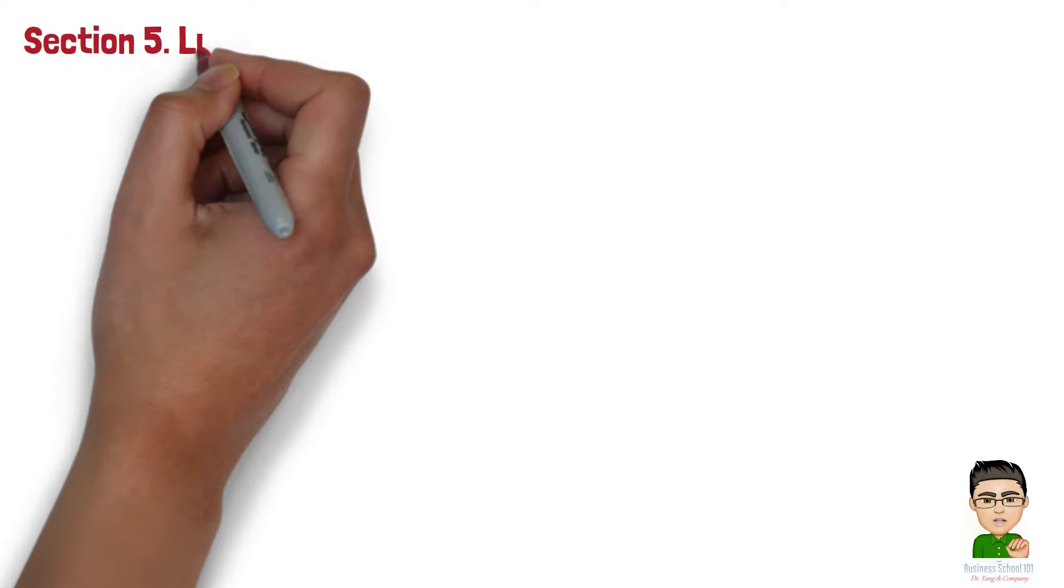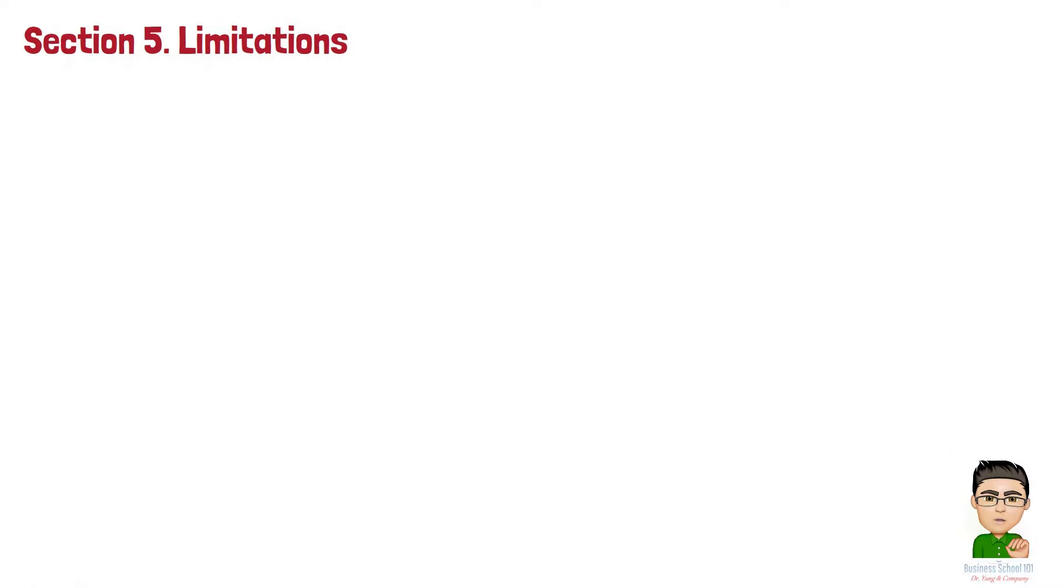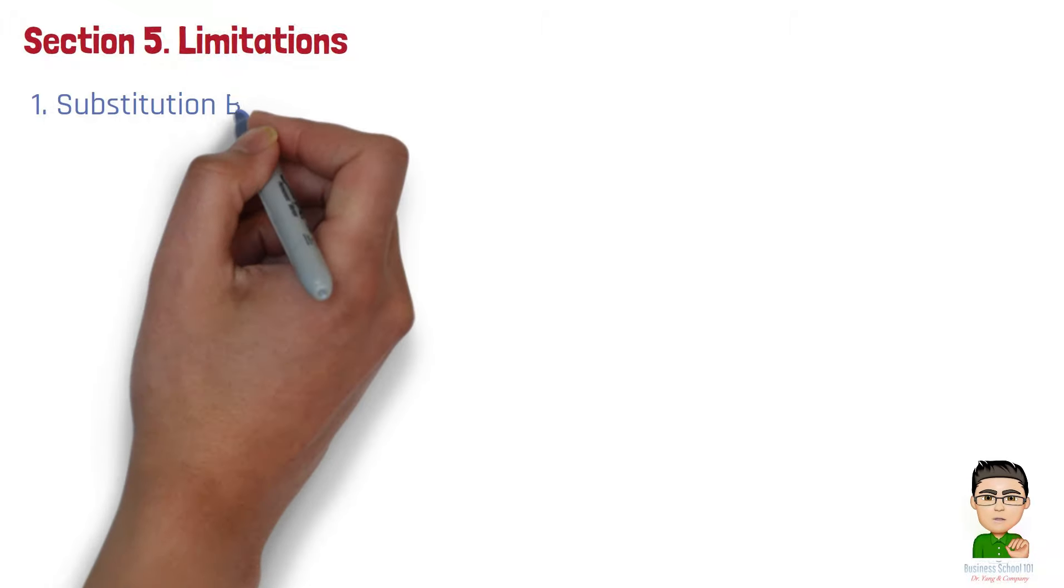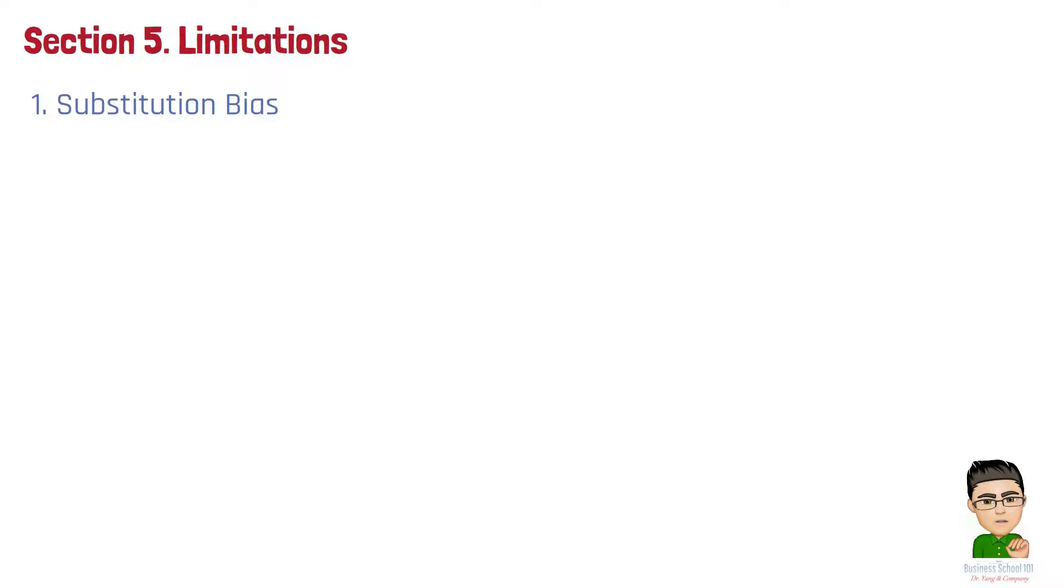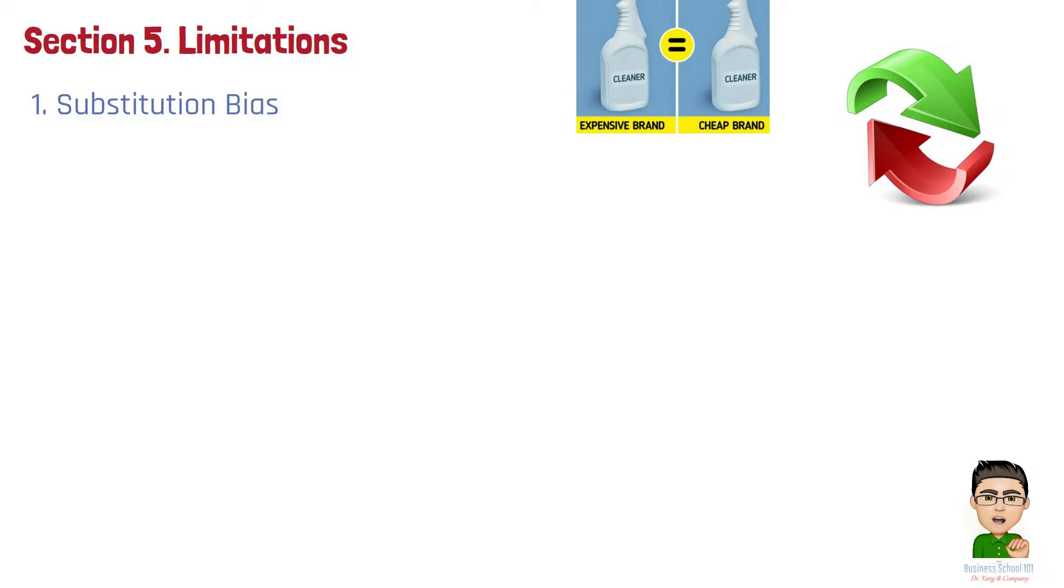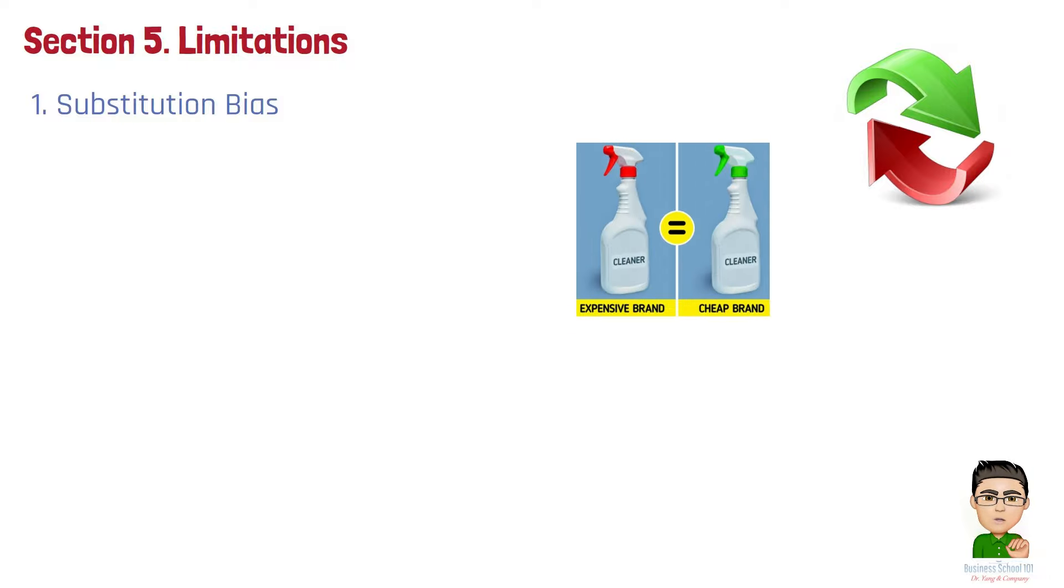Section 5. Limitations. Despite its importance, the CPI has several limitations that can affect its accuracy and relevance. Number 1. Substitution bias. CPI assumes that consumers continue to purchase the same market basket of goods and services regardless of price changes. In reality, consumers often substitute cheaper products for more expensive ones, which is not accounted for in the CPI.